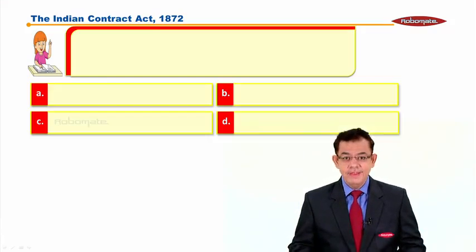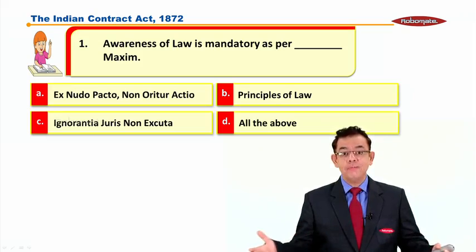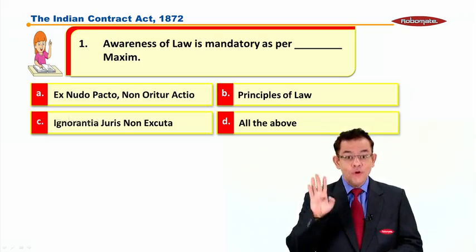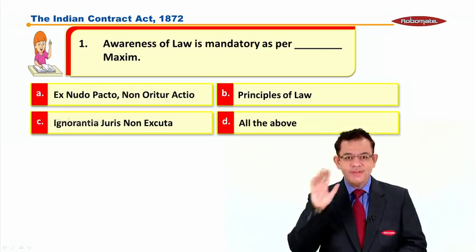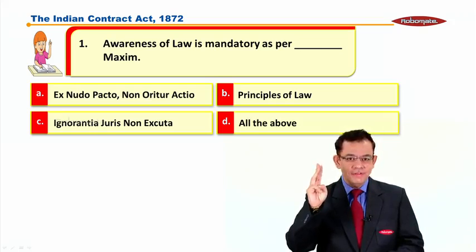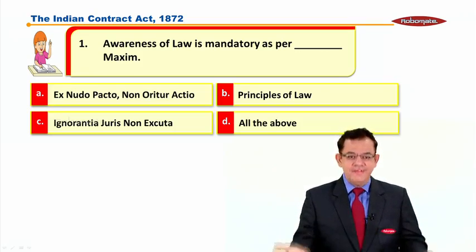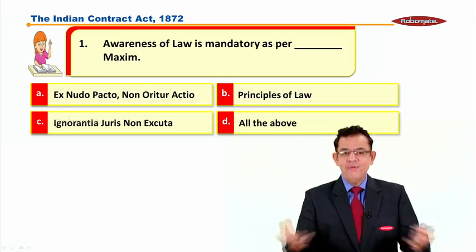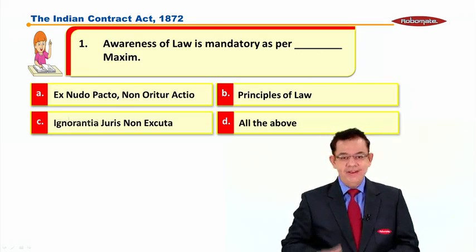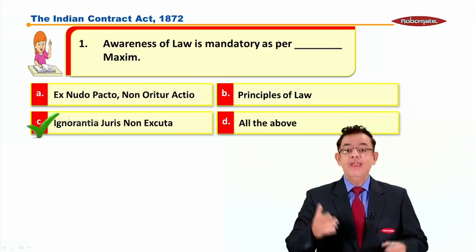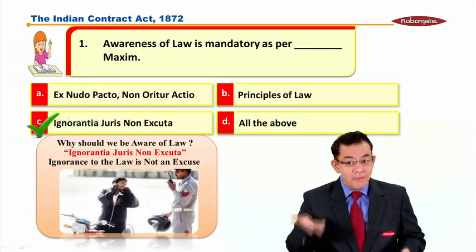Let us now start with MCQs — that is multiple choice questions. Here comes the first one: Awareness of law is mandatory as per which maxim? You can see a question with four options. Near the number, there is a student icon — the student is smiling, amazed while seeing the question, and hands raised, which means the question is easy, it looks wonderful, and the answer is known. The correct answer is: Ignorantia juris non excusat — ignorance of the law is not an excuse. You should be aware of the law.